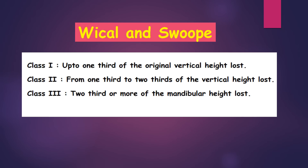According to Weichel and Swoop, classification is into Classes 1 to 3. In Class 1, up to one-third of original vertical height is lost. In Class 2, from one-third to two-thirds of vertical height is lost. And Class 3, two-thirds or more of the mandibular height is lost.